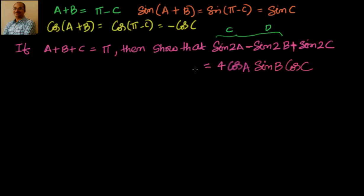Hi, welcome back. If you were able to solve the problem given in the last video — sin2a minus sin2b plus sin2c equals 4cosA sinB cosC — excellent job. Otherwise, we are going to solve it right now. Given a plus b plus c equals π, show that sin2a minus sin2b plus sin2c equals 4cosA sinB cosC.